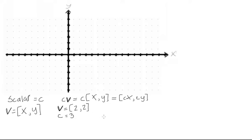And let's say our scalar that we're choosing is equal to 3. So, when we multiply, we'll write it like this: cv is equal to 3 times [2, 2], which is equal to 3 times 2 for the x component, so it's 6, and the y component is also 6.